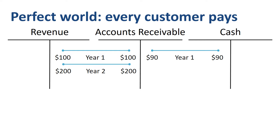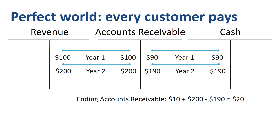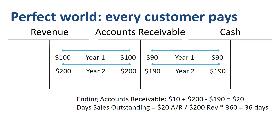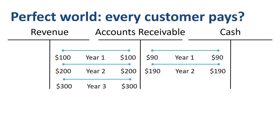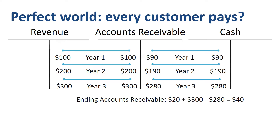Second year: revenue of $200, collections of $190. Then in year three, the ending accounts receivable balance equals the opening balance of $20 carried over from last year, plus revenue of $300, minus collections of $280, which is $40.